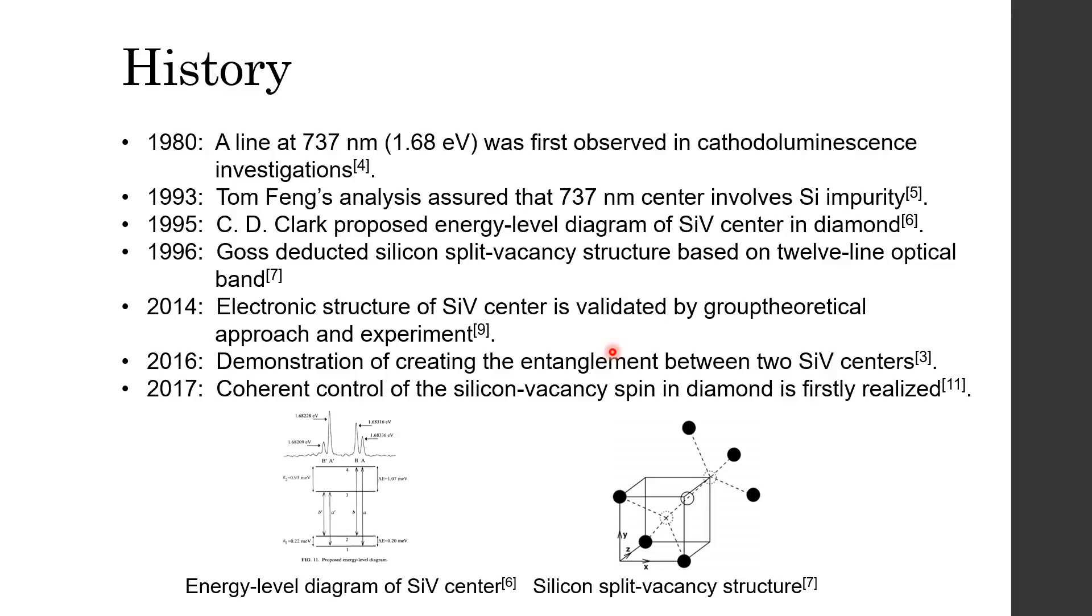In 1993, Tom Fan's analysis assured that the line at 737 nanometer involved the silicon impurity. Craig proposed the energy level diagram of SiV center in diamond in 1995. Until 1996, Gauss deduced the silicon split-vacancy structure based on zero-line optical band. In 2014, electronic structure of SiV center is validated by group theoretical approach and experiment.